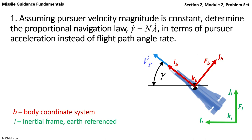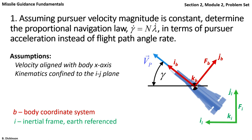But since we've aligned the velocity out the nose, then the flight path angle is also the angle of the body coordinate system with respect to the inertial frame. Now we're going to assume that the kinematics are confined to the ij plane, so we have pure planar motion.